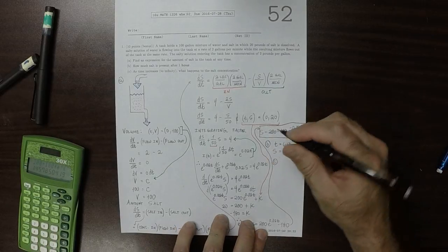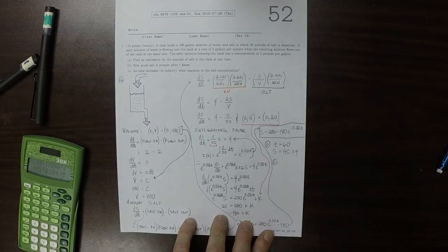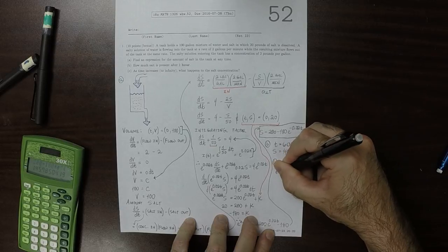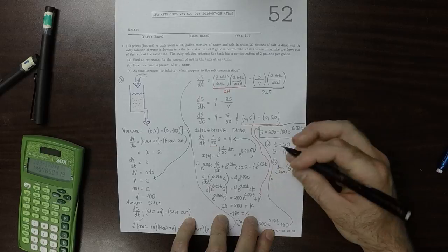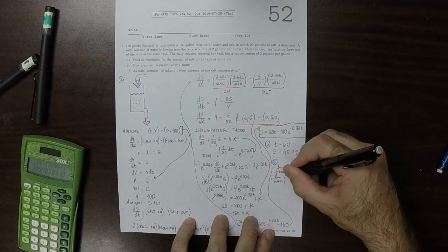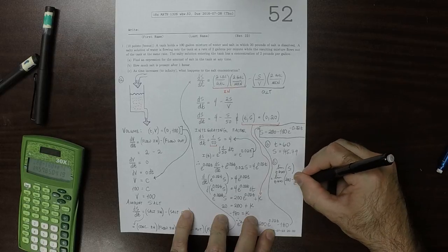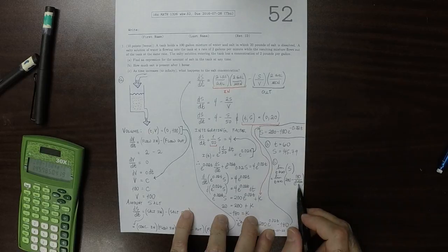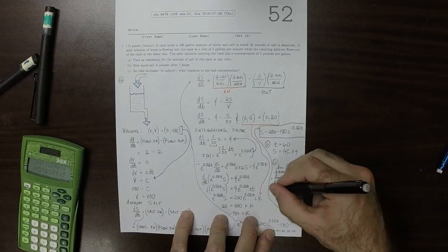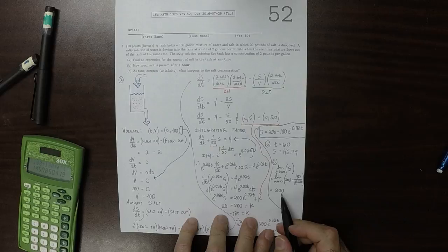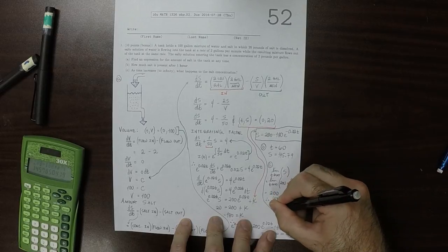For question C, what happens to the salt concentration? So the limit as t goes to infinity of S will be, because of the way this is structured, the limit as t goes to infinity of 200 minus 180 divided by exponential of 0.02t. So this term, as t goes to infinity, this factor in the denominator gets arbitrarily big. So 180 over arbitrarily big is 0, so this is 200. So in the limit, there will be 200 pounds of salt, and therefore the concentration will be 200 over 100, which is 2.